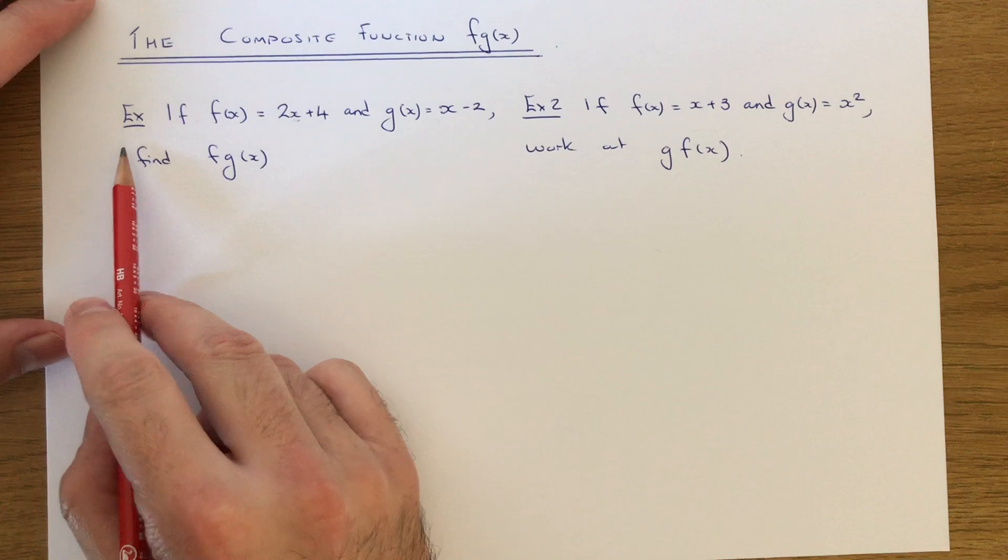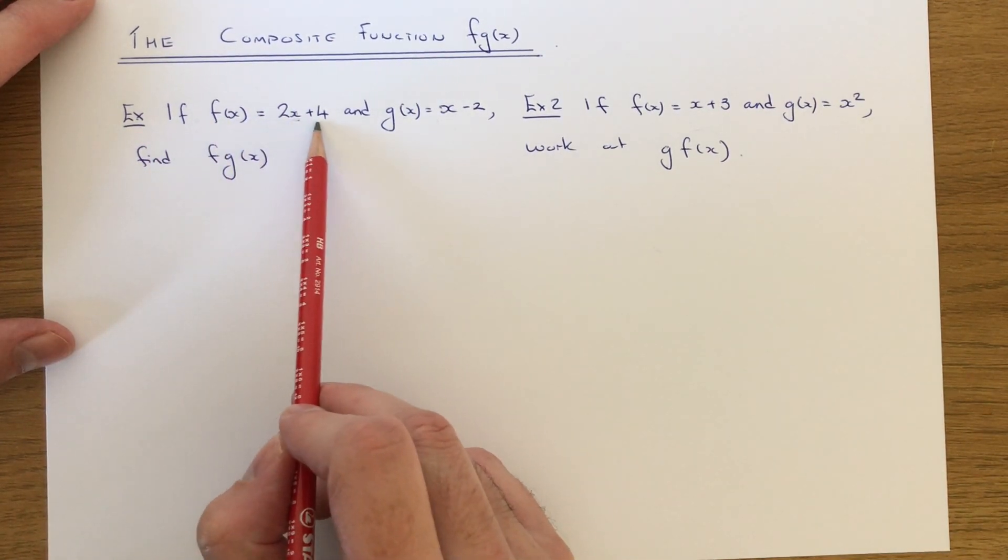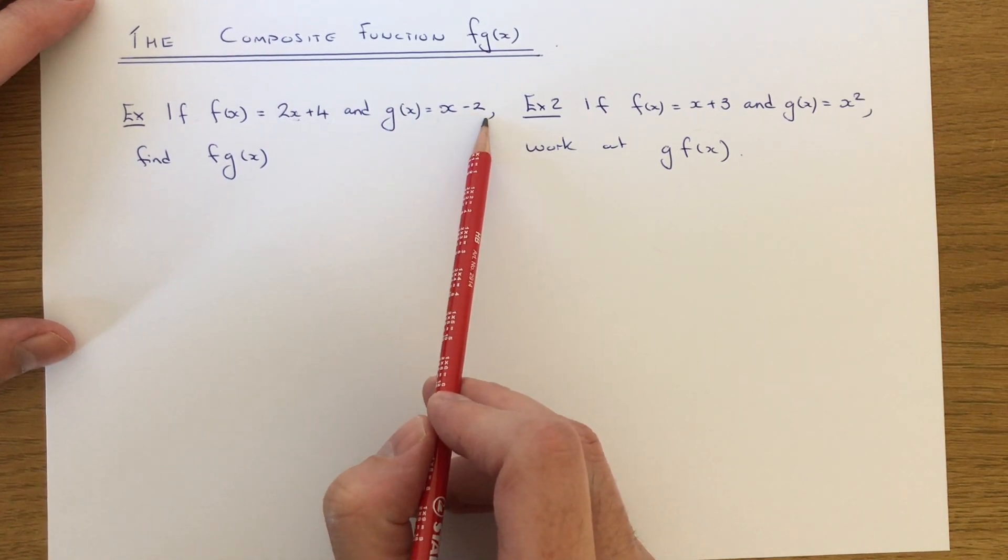So let's look at the examples that we have here. So in example 1 we've got f of x equals 2x plus 4 and g of x equals x minus 2.